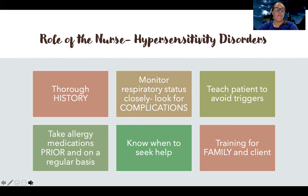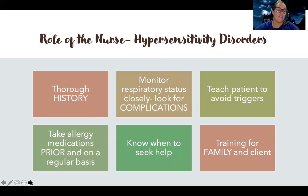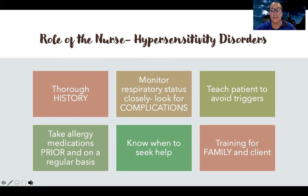I want to teach them about prevention — how to take their medications prior to exposure to their allergen and also regularly take them to prevent complications. They need to know when to seek help: when is a sign that this is expected, and when is a sign that they need to go get help. If something's getting worse, they can't breathe, swelling is starting to happen around their airway — they need to seek help immediately. Even if it doesn't seem that bad, like lips are just swollen or tongue is a little swollen, you'd be amazed at how quickly that can progress to the point where they can't breathe. Anything affecting their airway, they definitely need to get looked at ASAP.